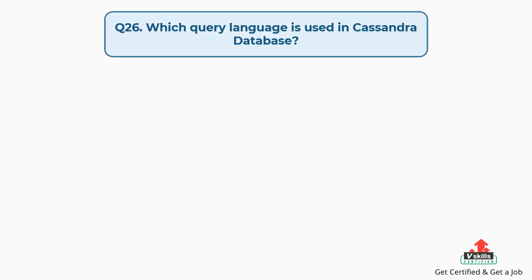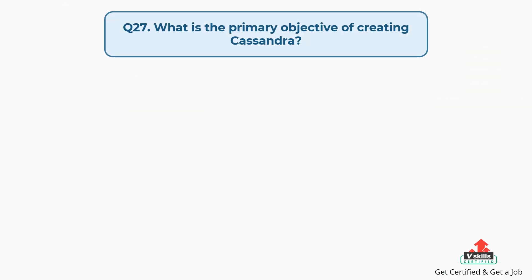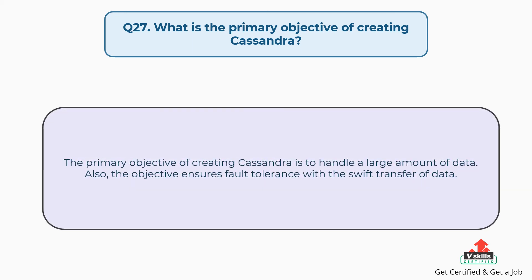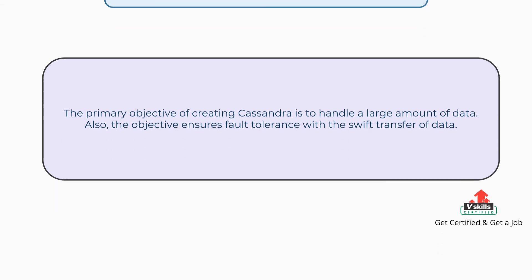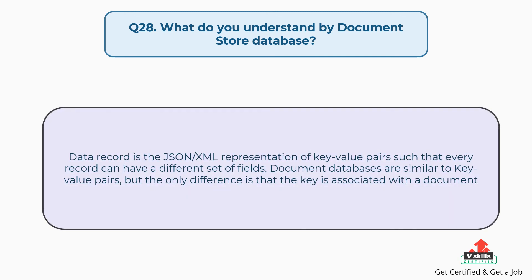Question number twenty-six: Which query language is used in the Cassandra database? Cassandra query language is used for Cassandra database. It is an interface that a user uses to access the database and is basically a communication medium such that all operations are carried out from this panel. Question number twenty-seven: What is the primary objective of creating Cassandra? The primary objective of creating Cassandra is to handle a large amount of data, and the objective also ensures fault tolerance with the swift transfer of data. Question number twenty-eight: What do you understand by a document store database? The data record is the JSON or XML representation of key value pairs such that every record can have a different set of fields. Document databases are similar to key value pairs, but the only difference is that the key is associated with a document.